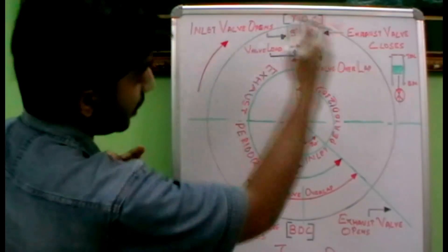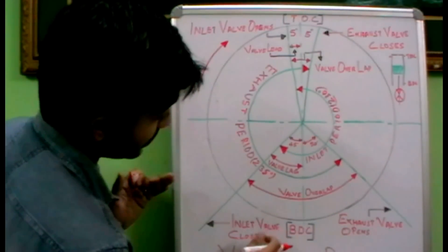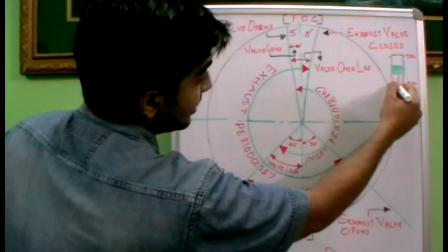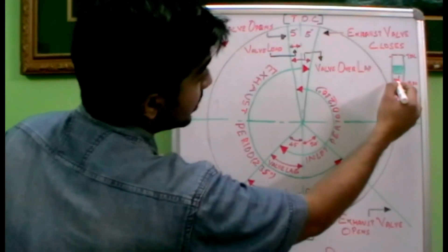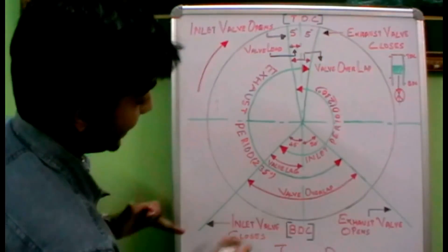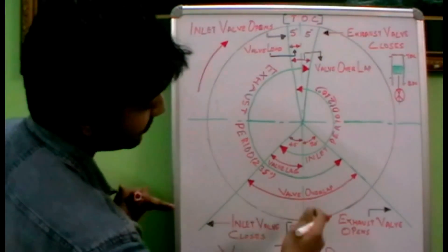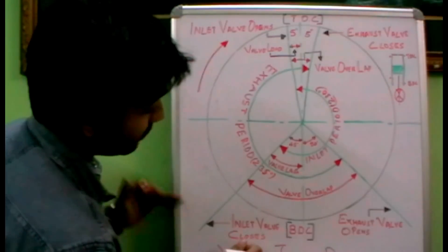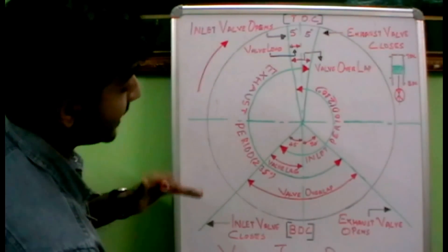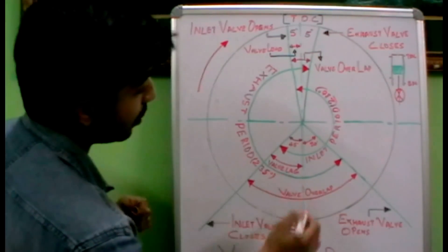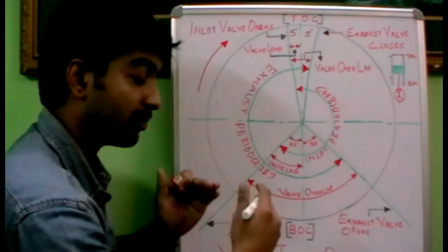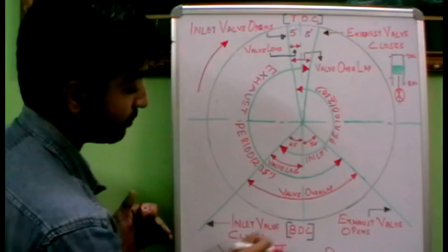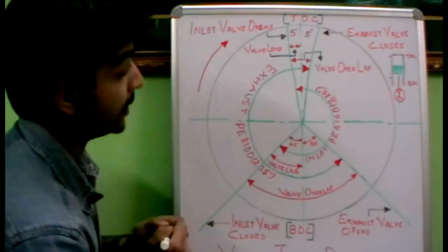The inlet valve closes 45 degrees after the bottom dead center. After the bottom dead center, the piston will tend to move upwards, and at that point the inlet valve closes. So after the bottom dead center, the crankshaft rotates about 45 degrees more before the inlet valve closes. This is called the valve lag period, because only after a 45-degree lag does the inlet valve close.